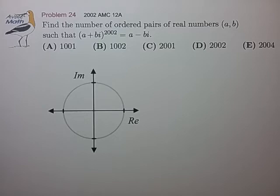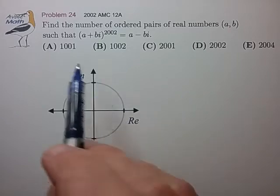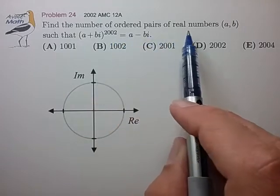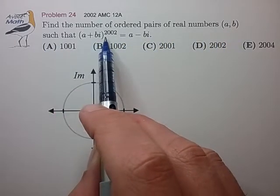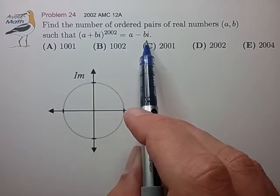Hi, here's another AMC problem involving complex numbers. Find the number of ordered pairs of real numbers (a,b) such that (a+bi)^2002 = a - bi.